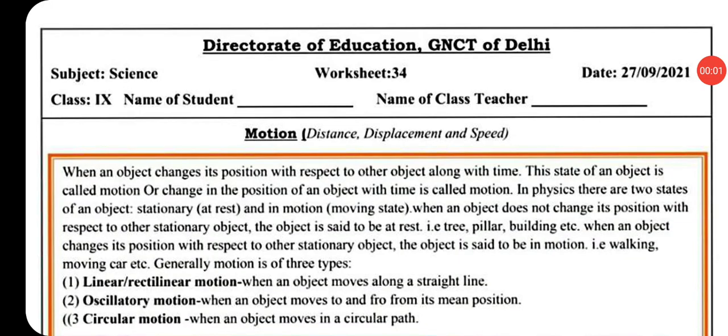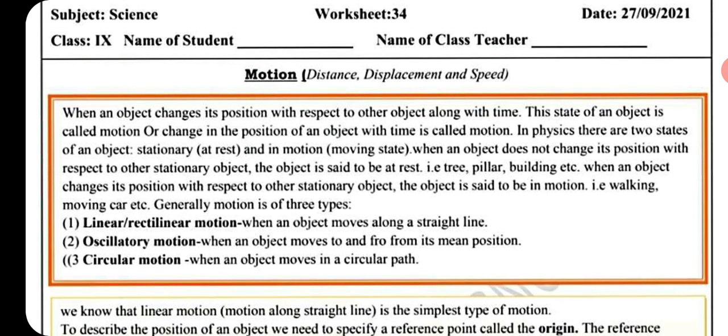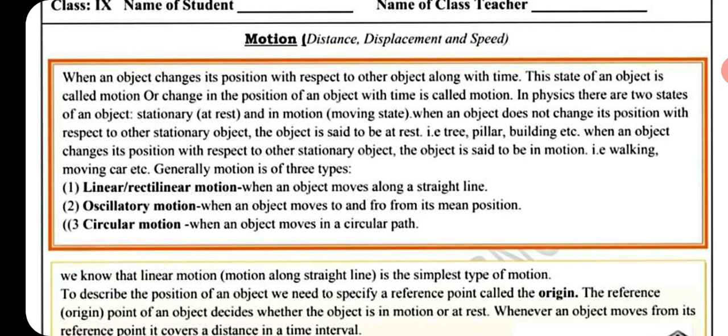Hello dear students, today we will discuss worksheet number 34, Class 9 Science: Motion — distance, displacement, and speed. When an object changes its position with respect to other objects along with time, this state is called motion, or change in the position of an object with time is called motion.